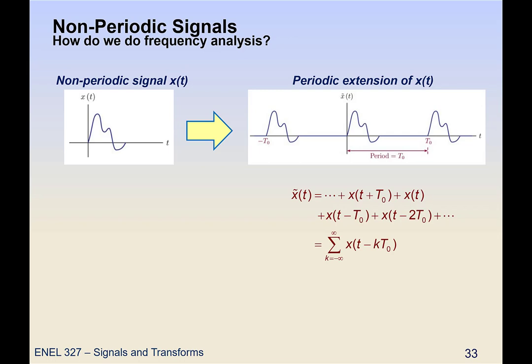Let's imagine that we take our original signal, a non-periodic signal, and we assume that it repeats itself every T₀. So we create what we call a periodic extension of x(t). You'll notice there is a tilde over this signal — that's just to indicate that it's periodic. This periodic extension can be defined as taking the original x(t) and repeating it every T₀, so we have copies at every integer multiple of T₀, and thus it can be represented as a summation.